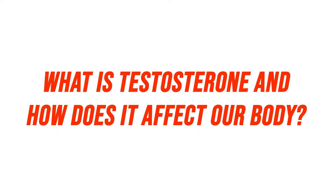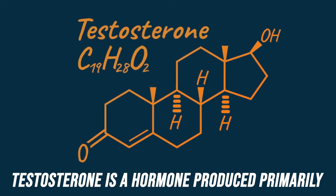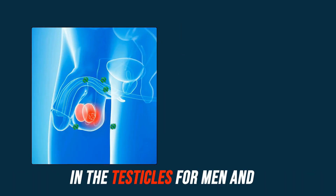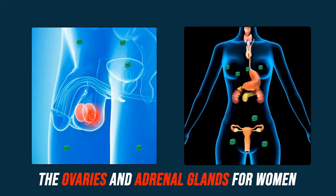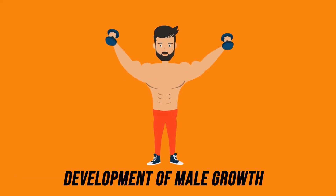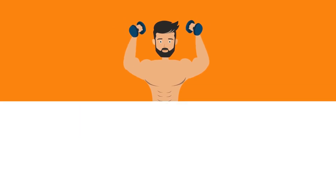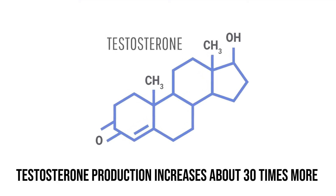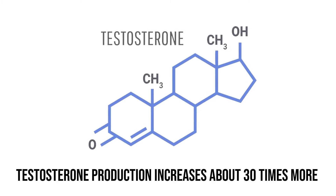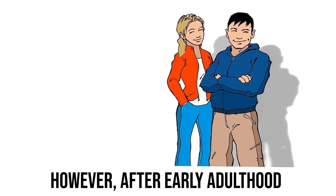So what is testosterone and how does it affect our body? Testosterone is a hormone produced primarily in the testicles for men, and the ovaries and adrenal glands for women. The hormone is essential to the development of male growth and masculine characteristics. Testosterone production increases about 30 times more during adolescence and early adulthood.